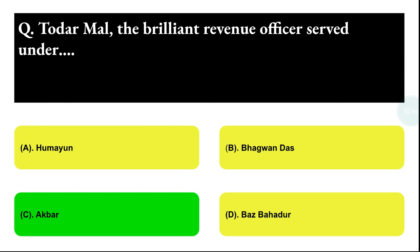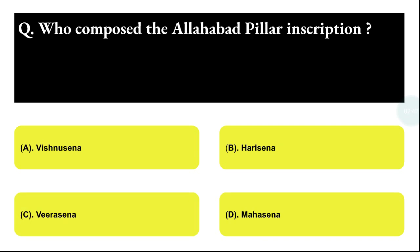Next question: who is the author of the Allahabad pillar inscription? Option A: Vishnu Sena, Option B: Hari Sena, Option C: Vir Sena, Option D: Maha Sena. The correct answer is option B, that is Hari Sena.